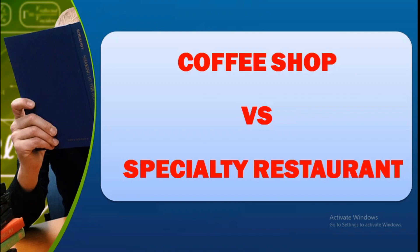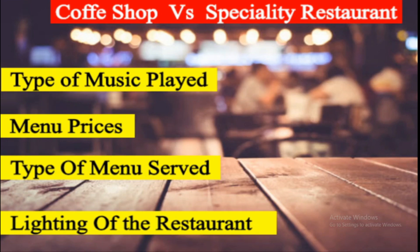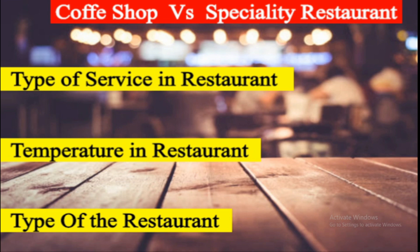These are subsections which come under the F&B service department. We will be differentiating these two restaurants based on a few parameters: timing, number of staff, location, type of cuisine served, type of music played, menu prices, types of menu, environment and lighting, types of service, temperature, and type of restaurant.